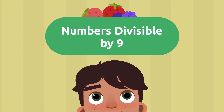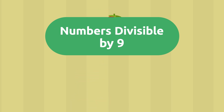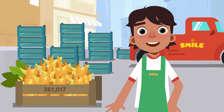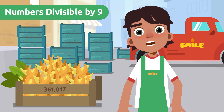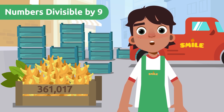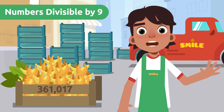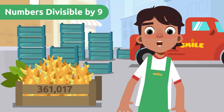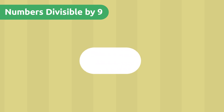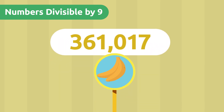Numbers divisible by 9. We also send bananas — they are very healthy. There are 361,017 bananas, and we'll send 9 per box. Let's see if we have any left over. The divisibility rule of 9 is calculated in the same way as for 3. We have to add its digits, divide the result by 9, and check that the remainder is 0.